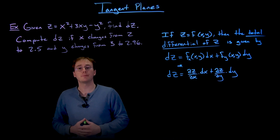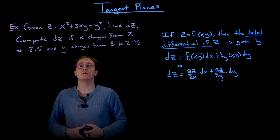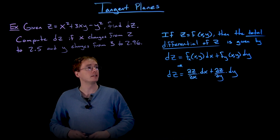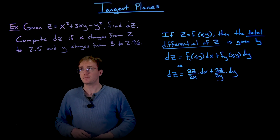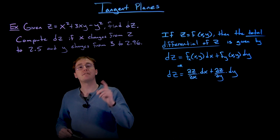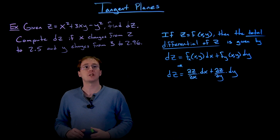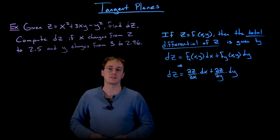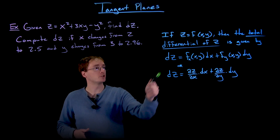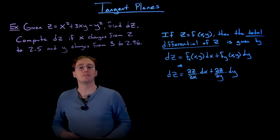Let's look at an example using the idea of a total differential. We're given the function z = x² + 3xy − y², and we're asked to find dz, the total differential of our function. Once we find the total differential, we'll compute it numerically if x changes from 2 to 2.5 and y changes from 3 to 2.96.